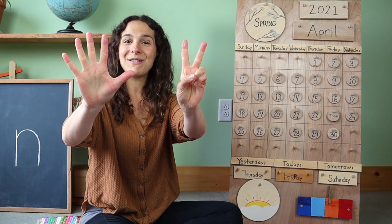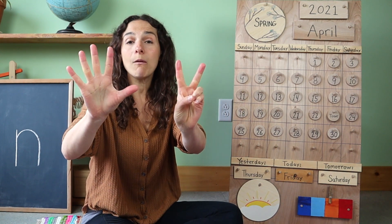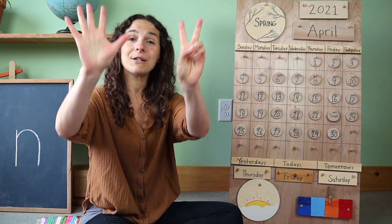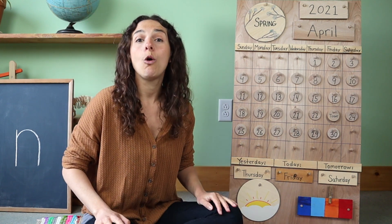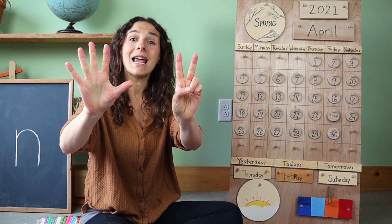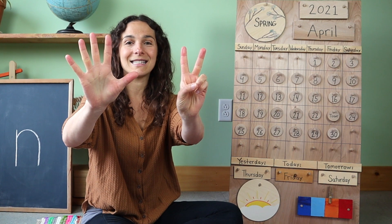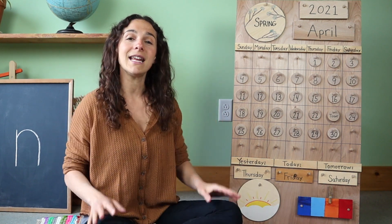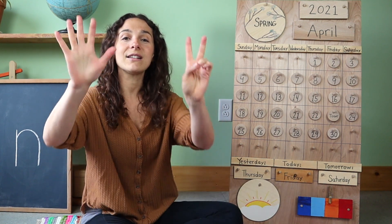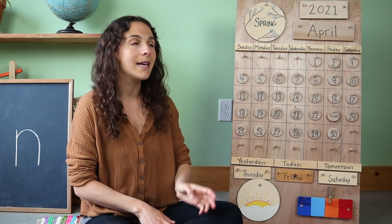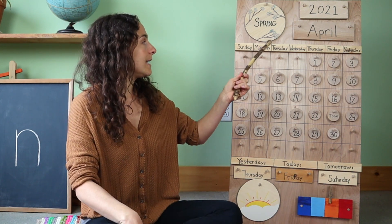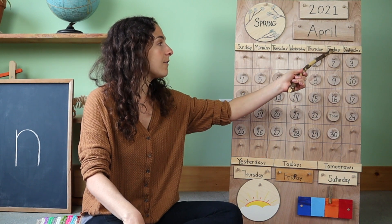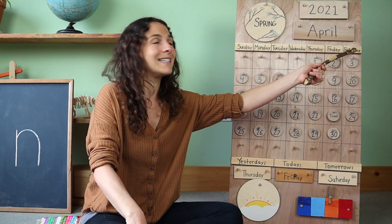Keep those seven fingers up like this, because now we're going to sing the days of the week song. Because we have seven days in our week, we hold up seven fingers. It goes like this: There are seven days, there are seven days, there are seven days in a week. Sunday, Monday, Tuesday, Wednesday, Thursday, Friday, Saturday.